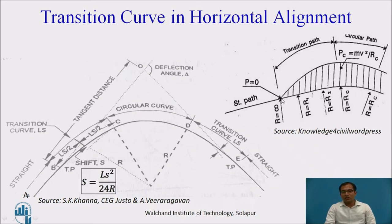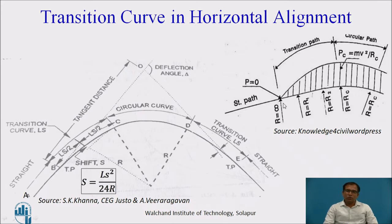If I design the transition curve between the circular and straight path, we can introduce the centrifugal force gradually from the start of the transition to the start of the circular curve, where it becomes constant. So at the start of the circular curve we will have a transition, and again at the end of the circular curve we will have another transition. This first application of the transition curve introduces centrifugal acceleration gradually from straight path to circular path, so there is no discomfort and smooth steering is also possible.